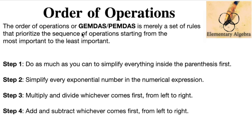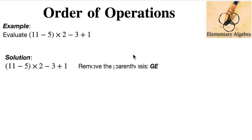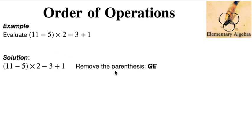As an example, let's have this number one. Evaluate quantity (11 - 5) × 2 - 3 + 1. So what is our solution? Let's do the GEMDAS. We have clearly a parenthesis here, so let's do first what is inside the parenthesis. We'll be removing the parenthesis first, following the GE, the groupings and exponents. Since there's no exponent, let's make it together.